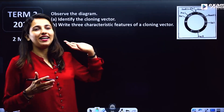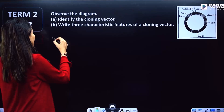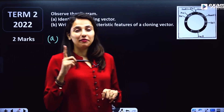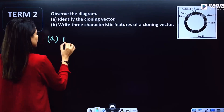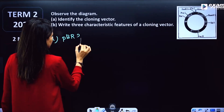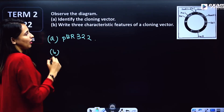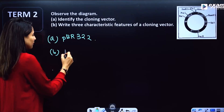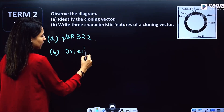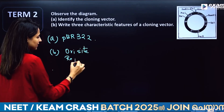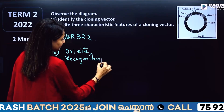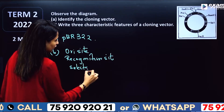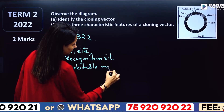One important question is the cloning vector. What is the cloning vector? The first artificial cloning vector is pBR322. There are three characteristic features of a cloning vector: the origin of replication, the recognition site, the cloning site, and the selectable markers.